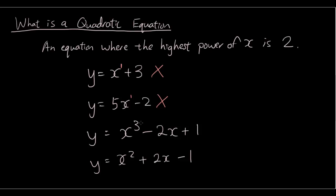The third equation has the highest power of x equal to 3. We want the highest power of x to be 2, so that's not a quadratic either. Now let's look at the last equation. We have x to the power of 2 and x to the power of 1 — the highest power is 2. So yes, this is a quadratic equation. Now we're going to look at how to graph this kind of equation.